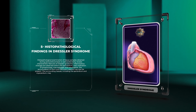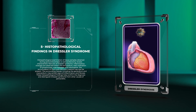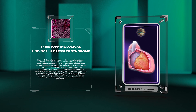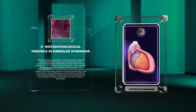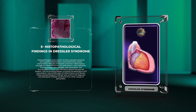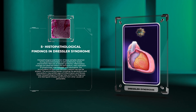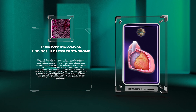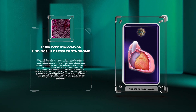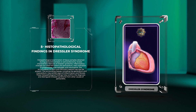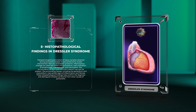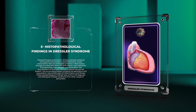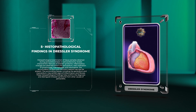Histopathological examination of tissue samples obtained during pericardiocentesis or pericardiectomy reveals characteristic features of Dressler syndrome. Inflammatory changes are observed within the pericardium, with infiltration of lymphocytes, macrophages, and neutrophils. The accumulation of fibrin and fibrinoid material may also be present. The surrounding tissues, including the epicardium and myocardium, may exhibit signs of inflammation and fibrosis. These histopathological findings help confirm the diagnosis and distinguish Dressler syndrome from other causes of pericarditis.